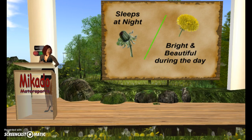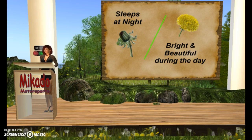Seeds are distributed once the blowball releases the pappus and its passenger into the wind. The pappus, like a small parachute, carries the seed for great distances on the wind currents. Like several flowers, at night the dandelion closes up and goes to sleep. Once daylight hits, it opens back up in all its great and glorious yellow splendor. It is during the daylight that the plant soaks up the sun, allowing it to create the energy to grow, develop, and multiply.